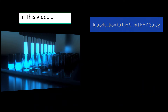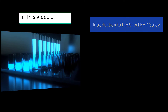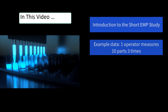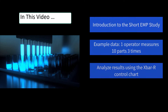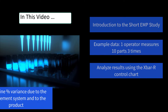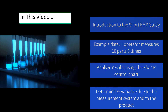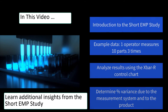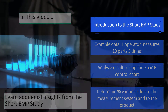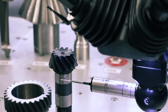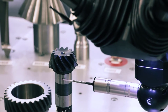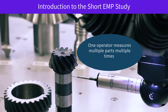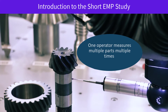In this video, we're going to start with an introduction to the Short EMP Study, give an overview of the steps, and show the example data. We're going to have one operator measuring 10 parts three times, analyze the results, and then determine percent variance due to the measurement system and to the product. Based on those, we're going to get additional insights from the study based on Dr. Wheeler's classification system.